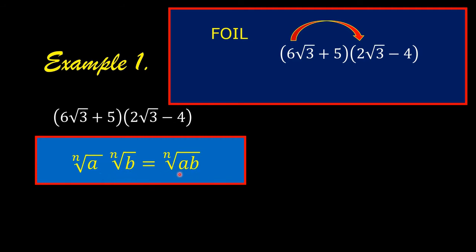We can multiply the radicals as long as the index of the first expression is the same as the index of the second. The index of the square root of 3 is understood to be 2, and the index of the square root of 3 here is also understood to be 2. So this is equal to 12 square root of 9.